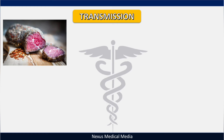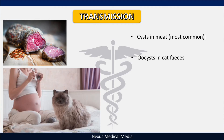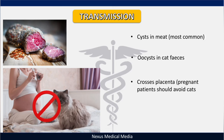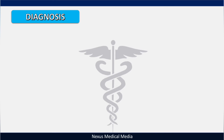Next are intracranial calcifications, as you can see by those calcifications shown here. Regarding transmission, toxoplasma is most commonly transmitted by eating meat with cysts. The oocysts of this parasite are also found in the feces of cats, so pregnant women should not handle cats, as the parasite can cross the placenta and cause congenital toxoplasmosis.